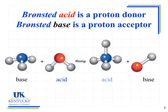Now we need to look at a slightly different definition: the Bronsted-Lowry acid and base. Nothing that is an Arrhenius acid becomes a Bronsted base or vice versa — if it's an acid it's an acid under both definitions. However, some compounds that can't be classified under Arrhenius can be classified under Bronsted-Lowry. It's a broader definition, and it looks at things within the context of a chemical reaction.